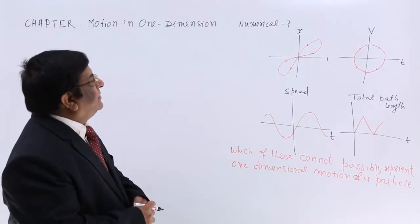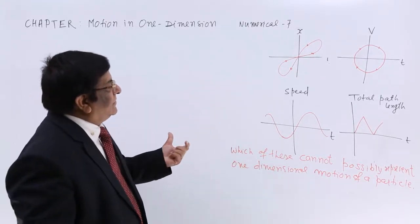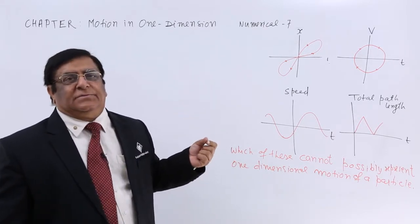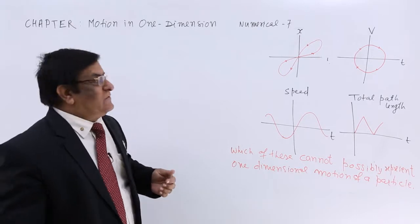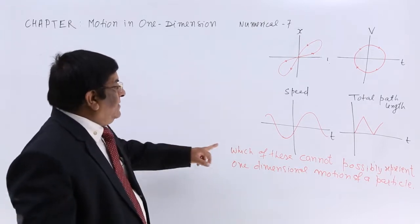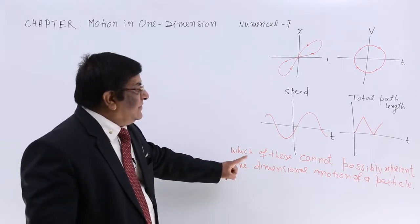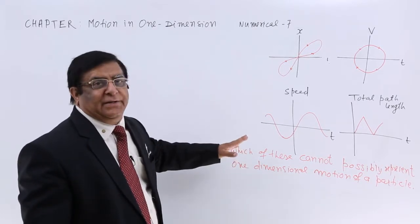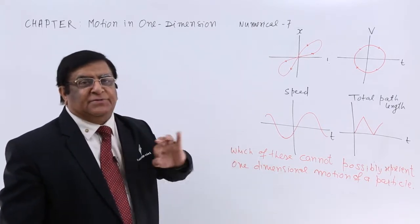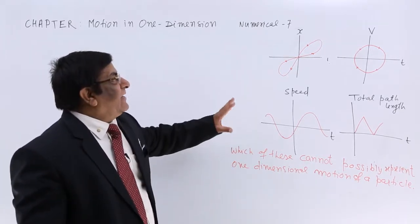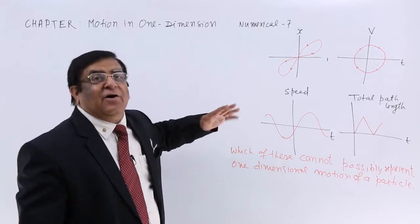This is a question which tests whether we can understand graphs with certain logics. Which of these cannot possibly represent one-dimensional motion of a particle? We know all the principles of one-dimensional motion and accordingly we will check whether these are valid or not.